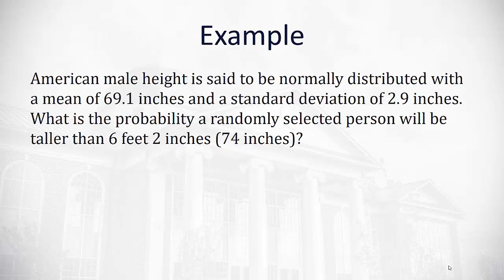So if the average American male height is said to be normally distributed with a mean of 69.1 inches and a standard deviation of 2.9 inches, what is the probability a randomly selected person will be taller than 6 feet 2 inches?